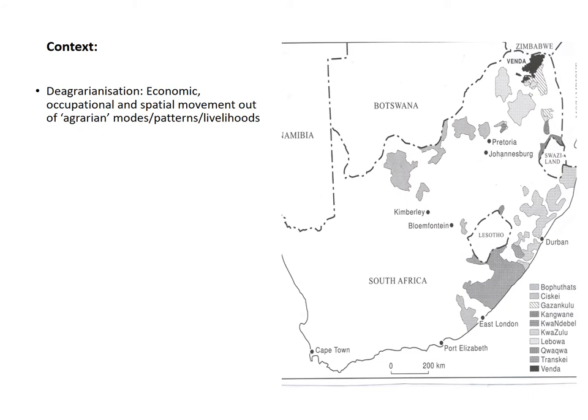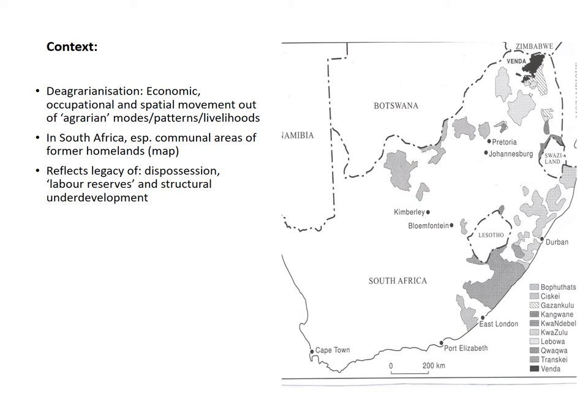De-agrarianization is conventionally defined as the economic, occupational, and spatial movement out of agrarian modes or patterns or ways of livelihood making. In the South African context, it's especially evident in the communal areas of the former homelands — the shaded areas of the map visible in this slide. These are essentially the ethnic enclaves constructed in the colonial period and solidified further under apartheid. Processes of de-agrarianization are particularly evident in these communal areas.